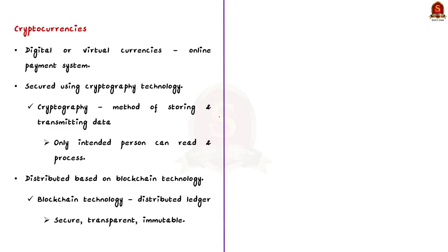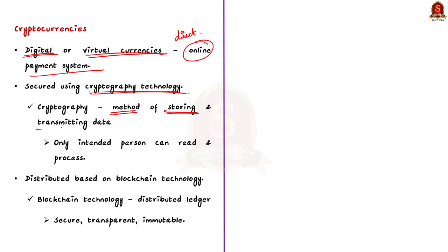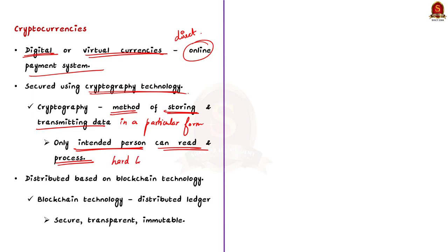Cryptocurrencies are digital or virtual currencies that allow people to make payments directly through an online system. Cryptocurrencies are secured using cryptography technology — cryptography is a method of storing and transmitting data in a particular form to protect it so that only the intended person can read and process the data. Since cryptocurrencies use this technology, it is much harder to counterfeit them. Also, cryptocurrencies are decentralized networks distributed based on blockchain technology — a distributed ledger that is secure, transparent and immutable.